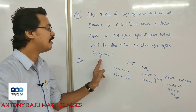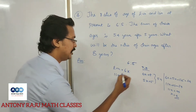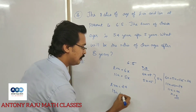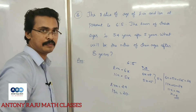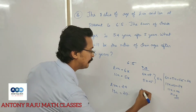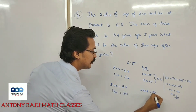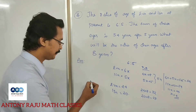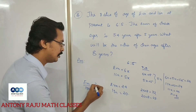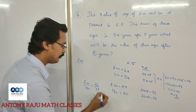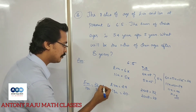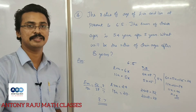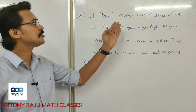After 8 years, Iba's age will be 6 into 4 plus 8 equals 24 plus 8 equals 32, and Isa's age will be 5 into 4 plus 8 equals 20 plus 8 equals 28. So the ratio of Iba to Isa equals 32 to 28, which simplifies to 8 is to 7.